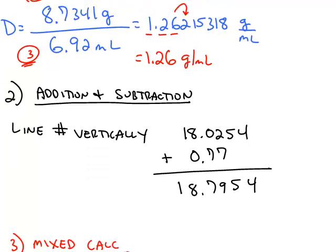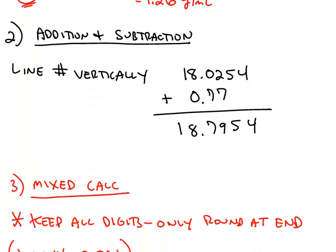Addition and subtraction problems are a little bit different. What you want to do in these problems is line your numbers up vertically, as I have here. Then you want to underline the last sig fig to the right. So in the top number it's here, and in the bottom number it's here.